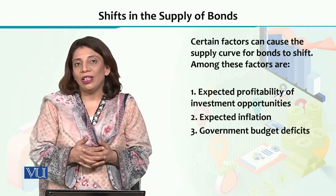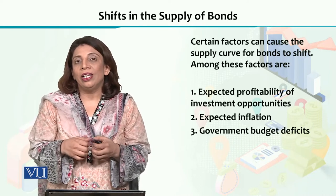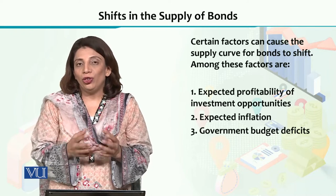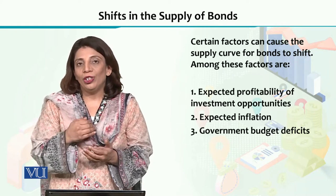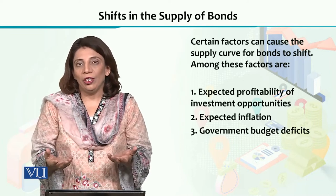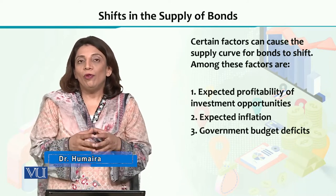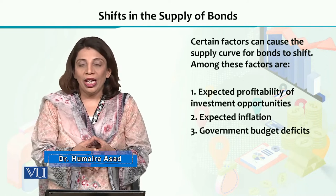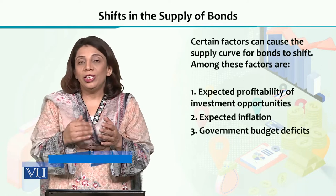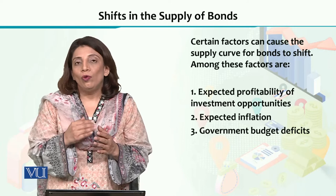But if there are changes in other factors, like if the government is experiencing a deficit in its budget — deficit means that revenues are less and expenditures are more — the government has an easy way to issue bonds. So in this situation, this is one reason for which we can see that the supply of bonds has increased.